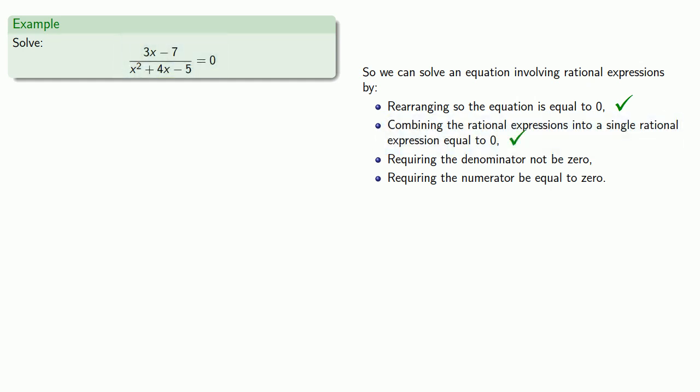Now we have to require the denominator not be equal to zero. And so since the denominator can't be zero, we'll see what would make it equal to zero. So we'll have our denominator equal to zero, and we'll solve. And because we're fantastically lucky, this one happens to be factorable.